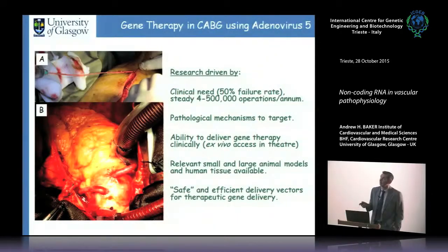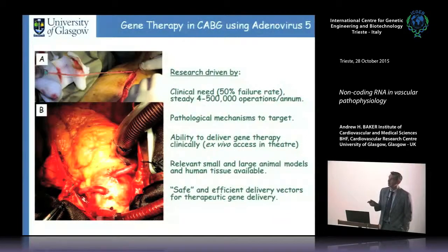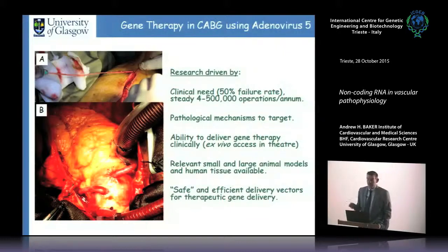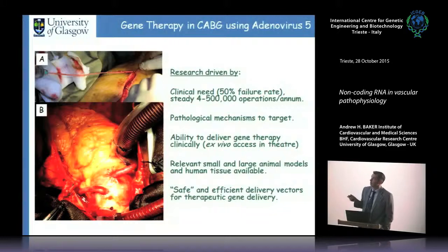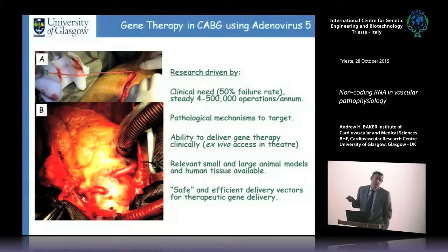We were originally interested in bypass grafting because this is a really good paradigm for gene therapy. There are two million of these operations worldwide every year; the vast majority use saphenous vein taken from the patient's leg, left in heparinized blood or saline for about 30 minutes while the surgeon prepares the heart. These bypass grafts come off the aortic arch to bypass lesions in the coronary arteries.